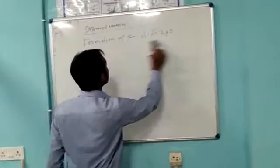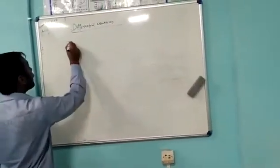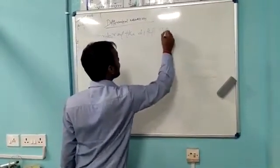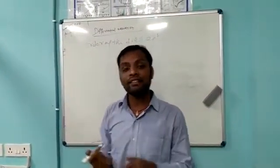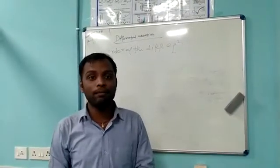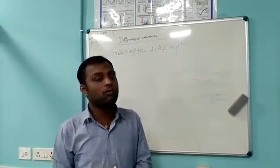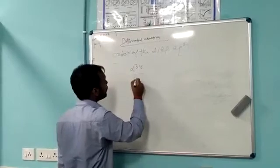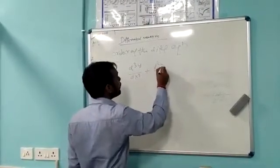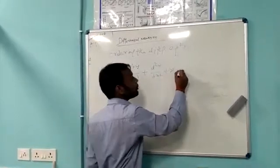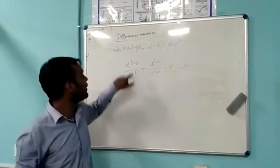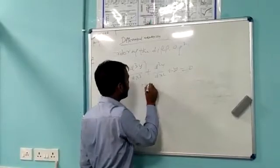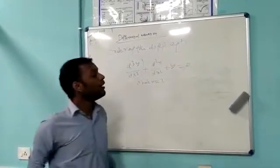Now let us explain the order and degree of the differential equation. The order of the differential equation is the maximum order of derivative in the equation y equal to f(x). For example, consider d³y/dx³ plus d²y/dx² plus y equal to 0. Here the maximum order of derivative is 3, so the order is 3.